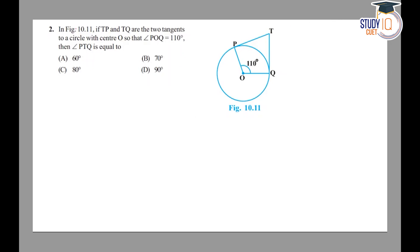In this question, we are given that in figure 10.11, if TP and TQ are the two tangents to a circle with center O, so that angle POQ equals 110 degrees, then angle PTQ is equal to what?